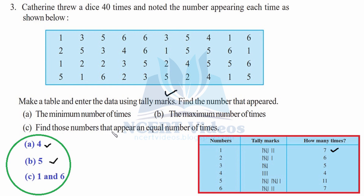Part C: find the numbers that appear an equal number of times. Looking at the tally marks, 1 and 6 appear to have equal counts. Checking the number of times column, both appear 7 times. So the answer is: 1 and 6 each appear 7 times.